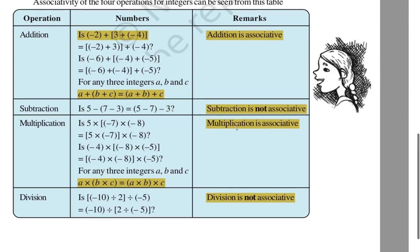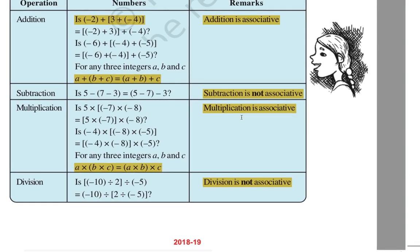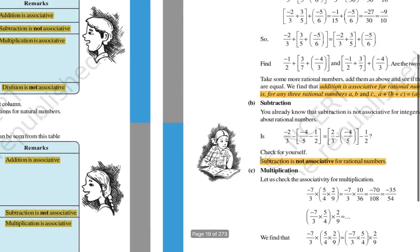For multiplication, using three numbers with grouping A into B into C: if you first do B into C and then multiply with A, or first do A into B and then multiply with C, you get the same result — so multiplication is associative. Division is not associative, as changing the grouping changes the result.